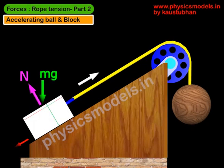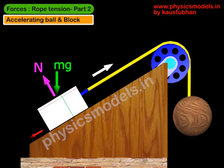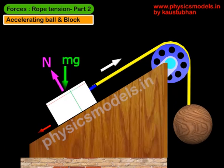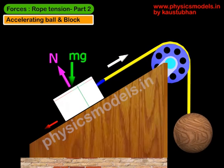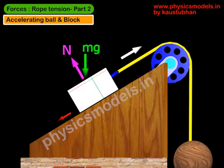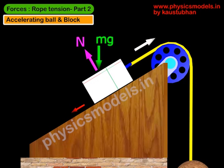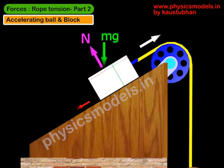Hi, in this video I'll talk about rope tension. It's part two of my video. In part one I've spoken about stationary masses. Here the ball and block are accelerating which makes it a complicated case. The ball is accelerating downwards, pulling the block up the plane and the rope acts as a medium of transmitting the force.